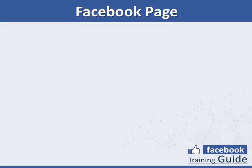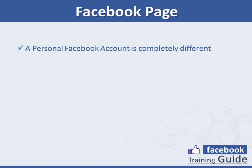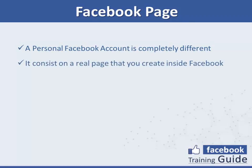What exactly is a Facebook page? A personal Facebook account is something completely different from a Facebook page. A Facebook page is a web page you create and connect to the Facebook platform. A personal Facebook account is simply an account for personal use. A Facebook page is what was called a fan page. In order to create a Facebook page, it is not necessary to have a personal Facebook account.